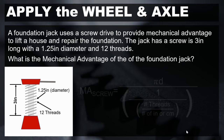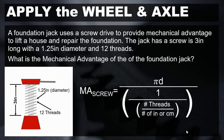Again, the equation for the mechanical advantage of the screw is the circumference divided by the pitch, expressed as: MA = (π × d) / (1/n × L). Now we're going to substitute in our known variables for the parts of the equation.